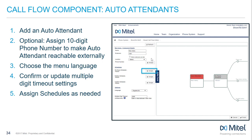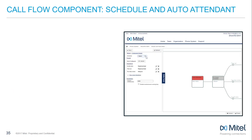Much of the programming within the auto attendant is by schedule, which is why we created our schedules in advance. Click Assign to open the on-hours schedule details. Schedules control call components based on the programming of business hours and determine the automatic routing of calls based on the choices made by the caller. Assign an on-hours schedule in the schedules drop-down menu if you want this auto attendant to be programmed for on-hours functionality.